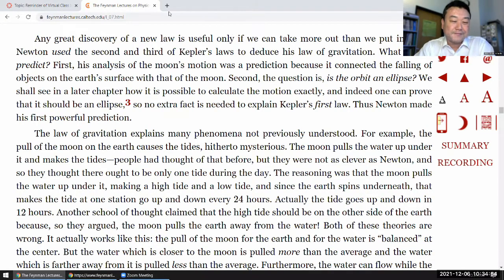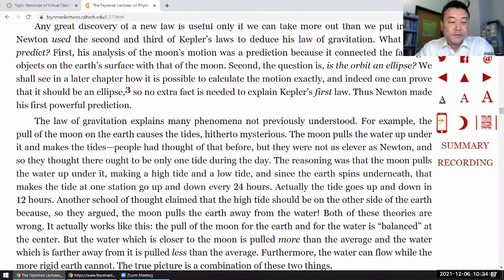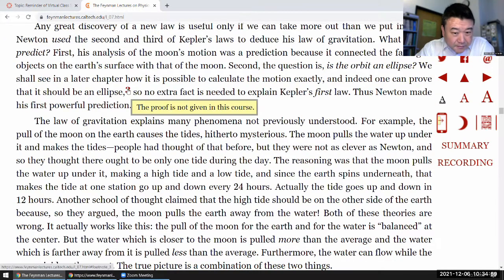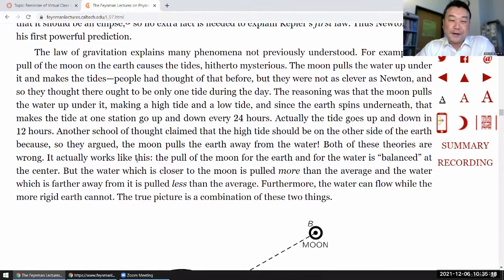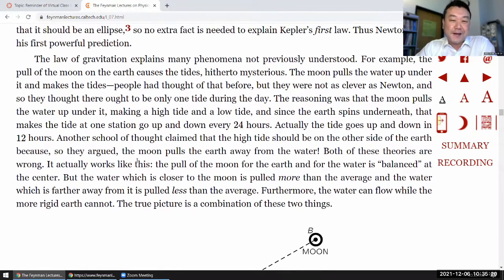And this is actually the part where you have to be good at calculus. And indeed, one can prove that it should be an ellipse. So no extra fact is needed to explain Kepler's first law. Thus, Newton made his first powerful prediction. Reduced three laws of planetary motion down to two. More or less. The law of gravitation. The proof is not coming in. There are textbooks, lower division physics textbooks that do go through this. And again, I'll say, you have to be really good at calculus to do it. I myself wouldn't try to do it without prior preparation. Because again, you have to be really good in calculus. And I'm not all that good enough in calculus to do it without prior preparation. The law of gravitation explains many phenomena not previously understood. For example, the pull of the moon on the Earth caused the tides hitherto mysterious.